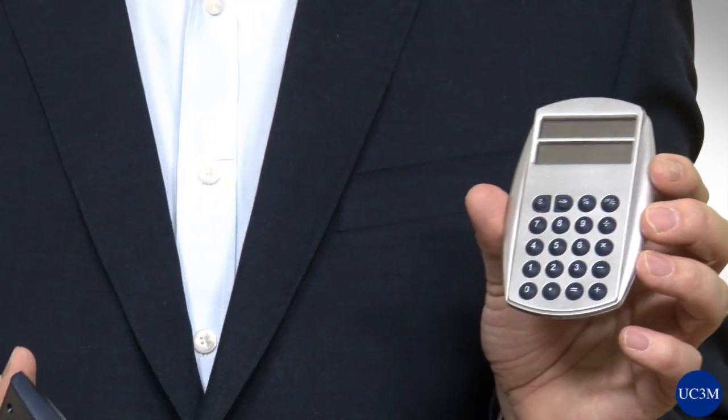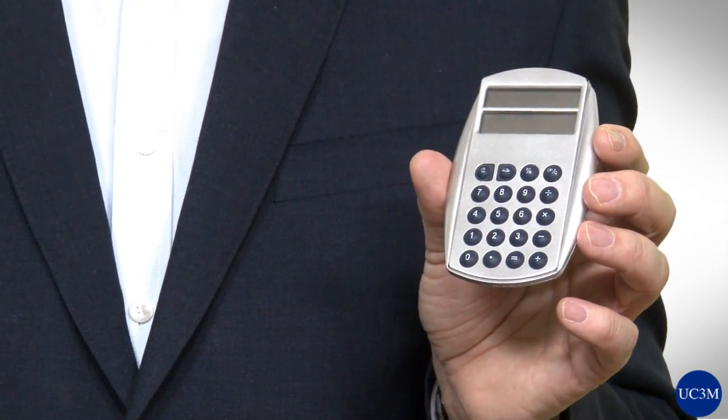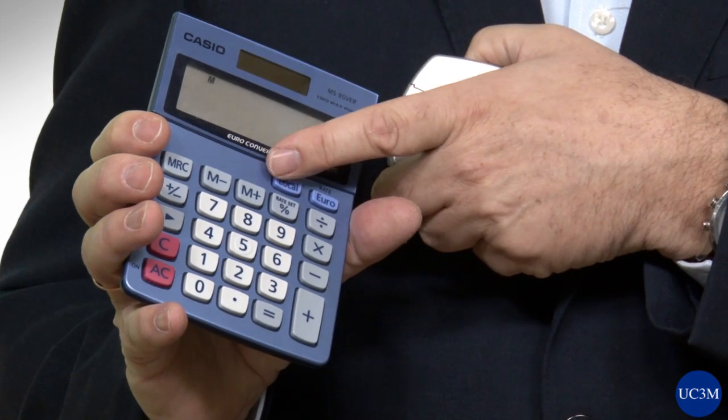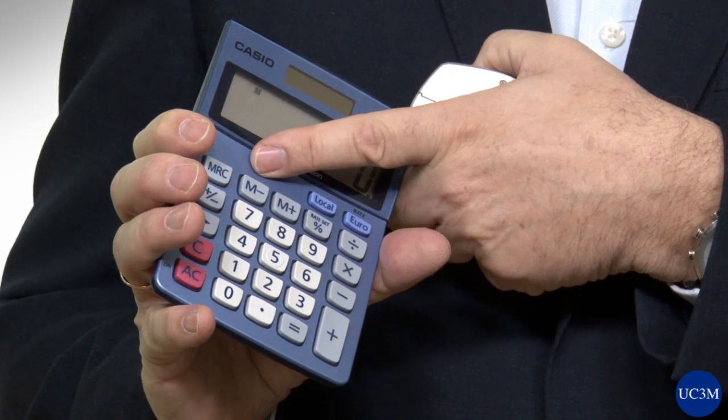Now, in the previous video we have considered a calculator like this. Numbers and the four basic operations. Now, we are considering a calculator like this, where we have memories. And we have some keys for storing or getting values from this memory. In this case we have just one memory.